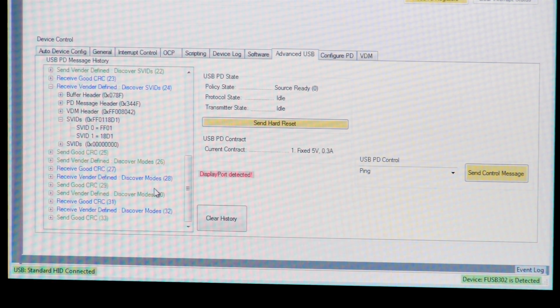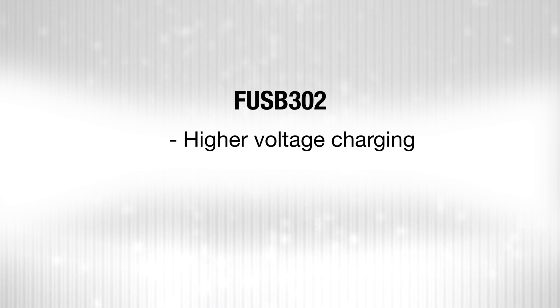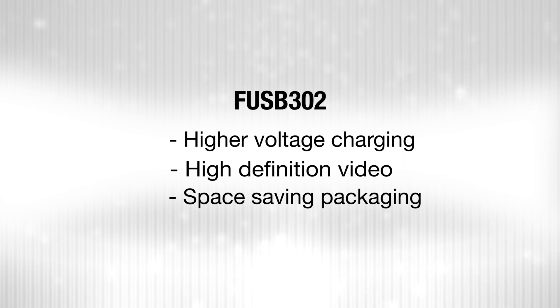Once it understands which modes it supports, it is free to then enter and exit those modes as needed. Clearly, the USB Type-C connector enables much more than just a universal, reversible connector. The FUSB302 Type-C port controller with power delivery is specifically targeted towards designers who want to take advantage of the higher voltage charging, high-definition video, or other possibilities with the Type-C connector, all in a space-saving package.